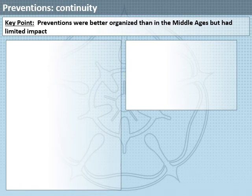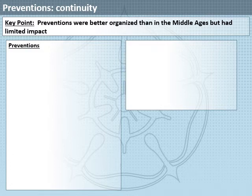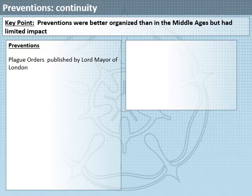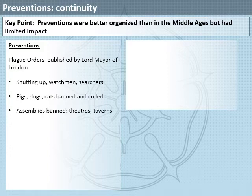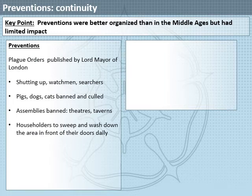Let's look at how people tried to prevent the plague. On the whole, we have continuity - preventions were slightly better organised than in the Middle Ages, but they had only limited impact. The Lord Mayor of London published plague orders, including shutting up entire families and appointing watchmen and searchers. Also the banning and culling of pigs, dogs and cats, closing theatres and taverns to ban large assemblies, orders for householders to sweep and wash down areas in front of their homes, and organising for the collection and removal of bodies.